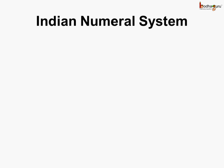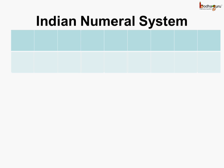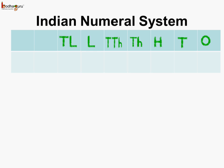Let us see how the Indian numeral system and international numeral system are related. In the Indian numeral system place value chart we have: ones, tens, hundreds, thousands, ten thousands, lakhs, ten lakhs, crore and ten crores.